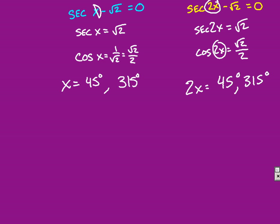Which means in the end, we would need to divide by 2 to be able to get our final answer, which means x in this case, our answer would be 22.5 and 315 over 2, which should be 162.5.